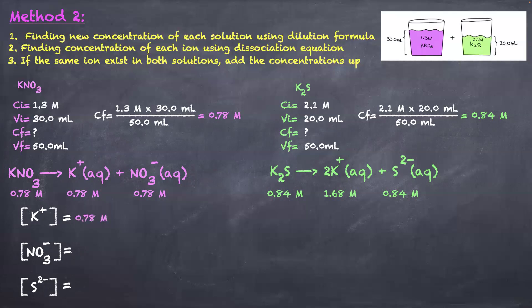Since K⁺ appears in both solutions, we add the concentrations: 0.78 M from the first solution plus 1.68 M from the second gives the final K⁺ concentration. NO₃⁻ only comes from the first solution, so its concentration is 0.78 M. S²⁻ only comes from the second solution, so it's 0.84 M. Comparing method two to method one, we get exactly the same numbers — so you can choose whichever method you prefer.